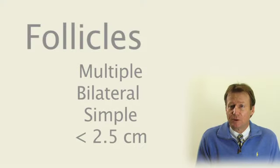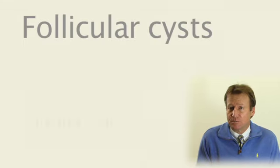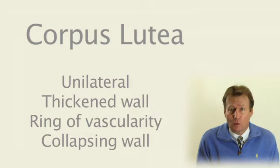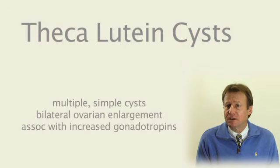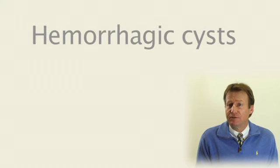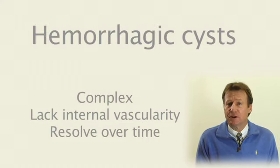Follicles tend to be multiple, bilateral, simple, and less than 2.5 centimeters. Follicular cysts are simple, greater than 2.5 centimeters, and regress over weeks to months. Corpus lutea are unilateral in ovulating patients, with a thickened wall, ring of vascularity, and often an irregular collapsing wall. Corpus luteum cysts are greater than 2.5 centimeters with a ring of vascularity. Theca-lutein cysts present as multiple simple cysts with bilateral ovarian enlargement, associated with elevated HCG conditions like molar pregnancy or multiple gestation. Hemorrhagic cysts may arise from any functional cyst, giving a complex appearance without vascularity that may resolve over time. These are far more common than neoplasm in reproductive-age women and should be highest in the differential, allowing time for observation to make the diagnosis.